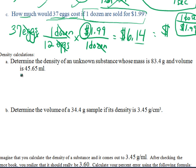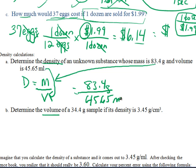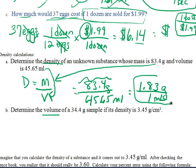Density calculations: if it says determine the density, you just straight up do mass divided by volume. It says determine the density of an unknown substance whose mass is 83.4 grams and the volume is 45.65 milliliters. So we do 83.4 grams over 45.65 milliliters — the number comes out to 1.83. Keep three sig figs because of the mass: 1.83 grams per milliliter. Grams and milliliters don't cancel, so you end up with grams over milliliter.